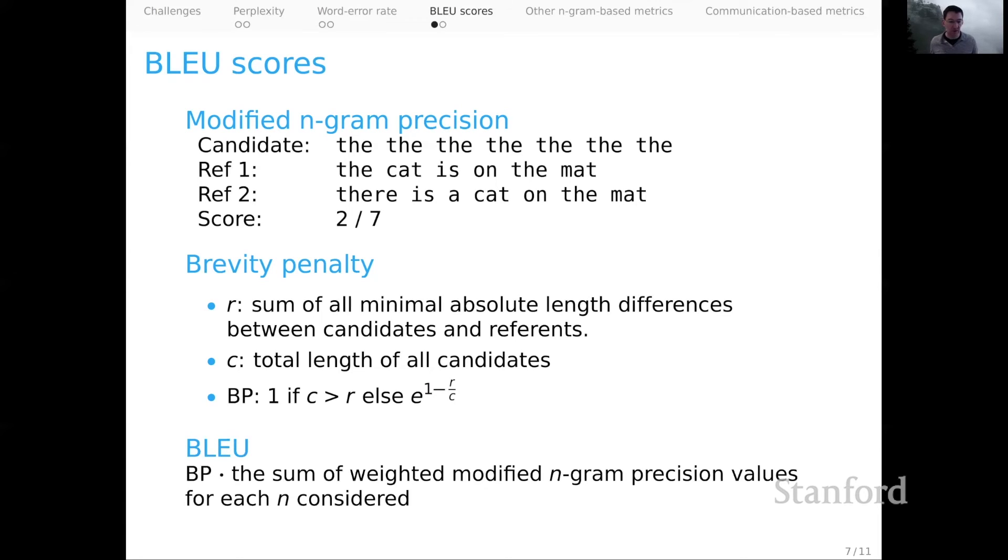And then the BLEU score is simply the product of that brevity penalty with the sum of the weighted modified n-gram precision values for each n-gram value n considered. So we'd probably go one through four. That's a standard set of n-grams to consider. We would sum up all those notions of modified n-gram precision for each n, and possibly weight them differently depending on how we want to value one-grams, two-grams, three-grams, and four-grams.